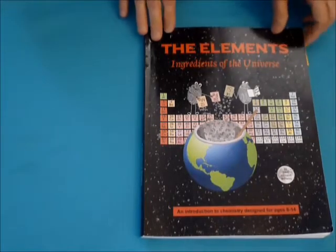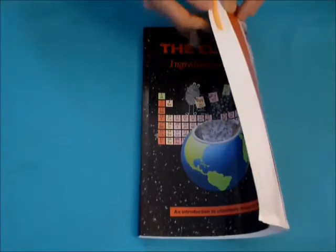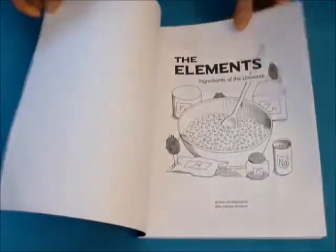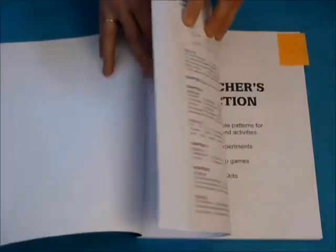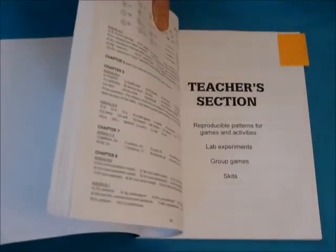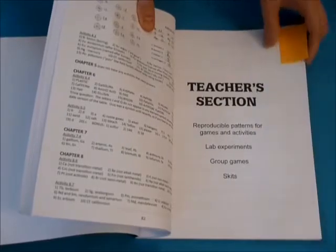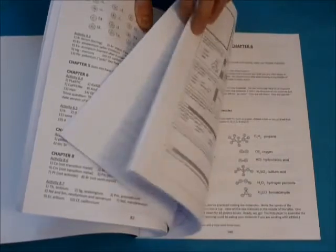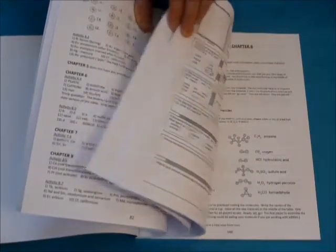If you buy the full curriculum, you get a book that has both the student guide. The first part of it will be the student text, and then the second half is the teacher section, which is where you get all the patterns for the games and instructions for labs and activities.